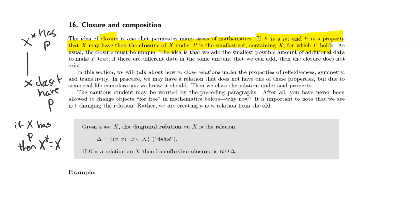If there are different data in the same amount that we can add, then the closure does not exist. We can't have the situation where there is a closure one and a closure two. If that happens, then those two things have to be equal or else X does not have a closure.